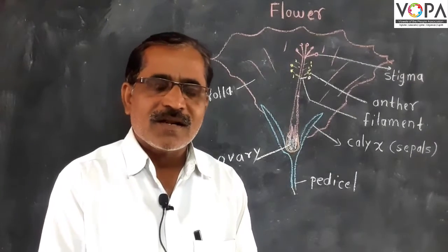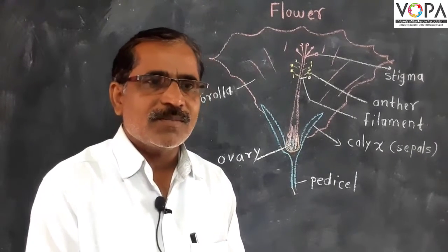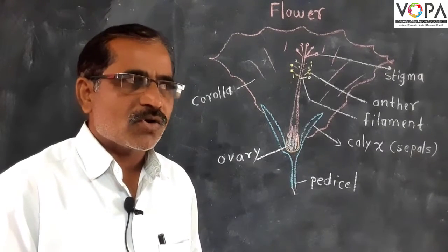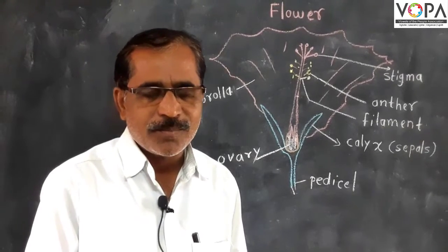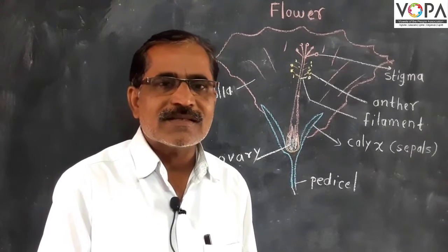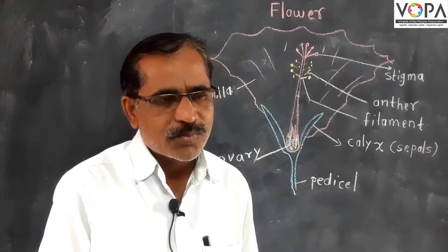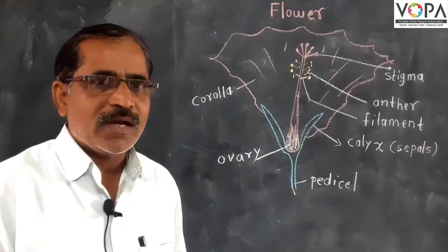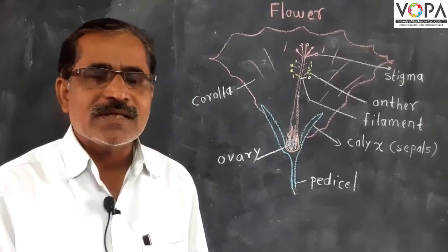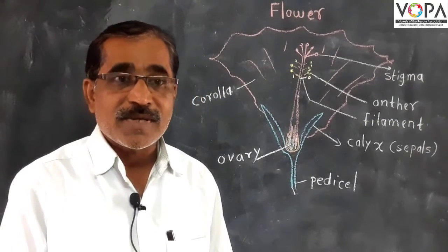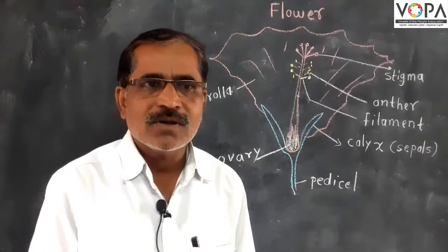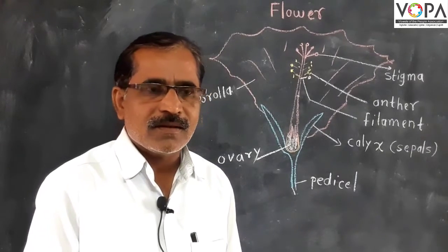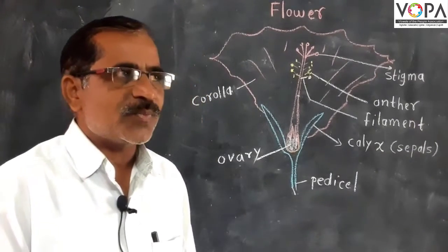Another part of the flower is corolla. Corolla is made up of petals. Petals are colorful and attractive, and there is also a smell to the corolla.